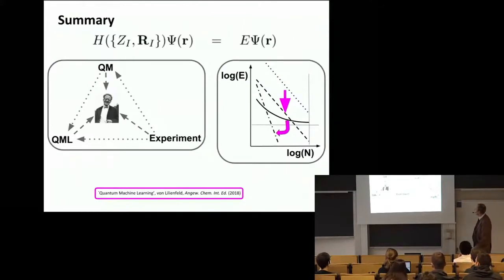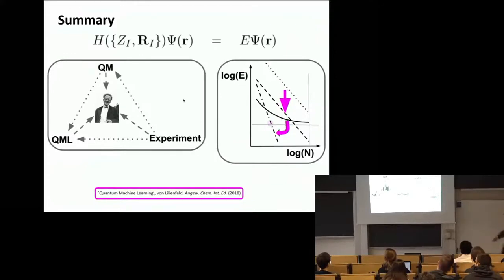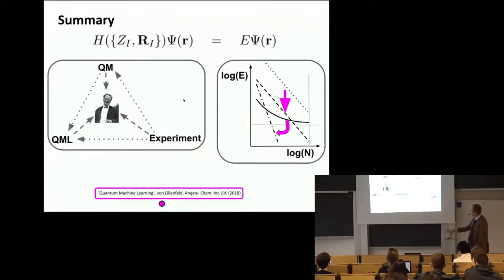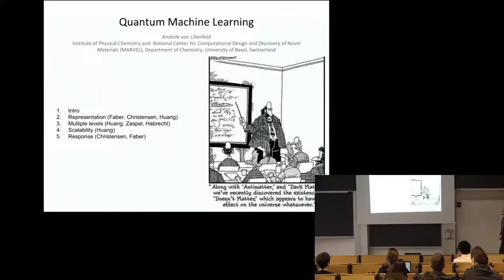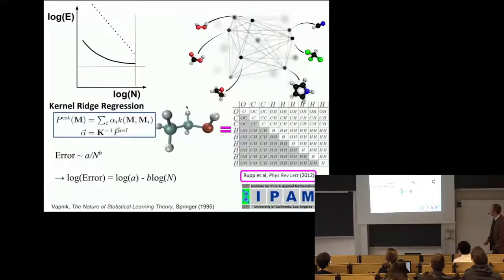We really use these learning curves a lot — a lot of our machine learning research is about how can we lower these curves or improve the slope. I recently published a little perspective on this. Now I'd like to tell you about our work on representations. This really started in 2011 when I organized a long program at the Institute of Pure and Applied Mathematics at UCLA. Klaus-Robert Mueller came together with his postdoc Matthias Rupp — they are machine learning people — and we started to discuss these things.